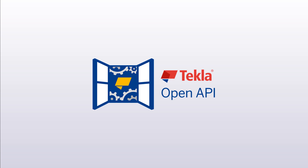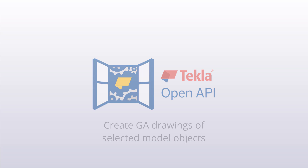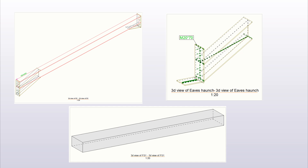This video shows how to create GA drawings of selected model objects. Based on the user selection, drawings can be created of single parts, components, and assemblies.